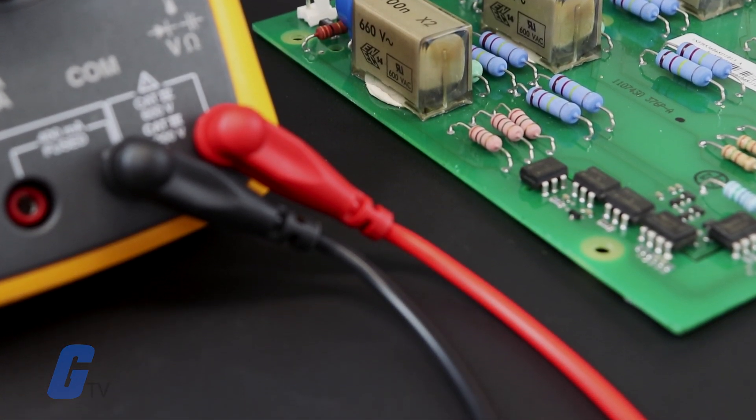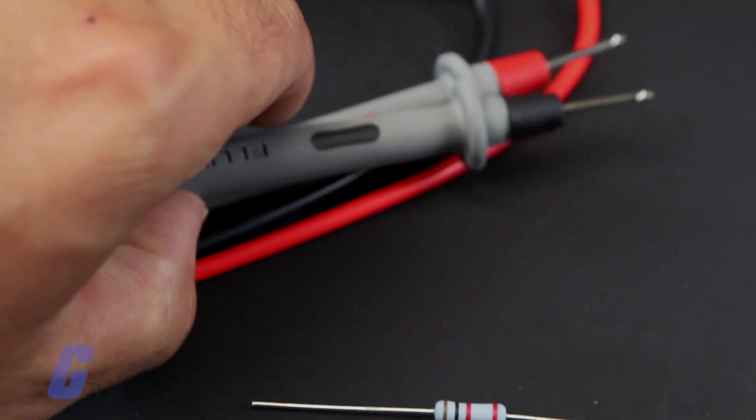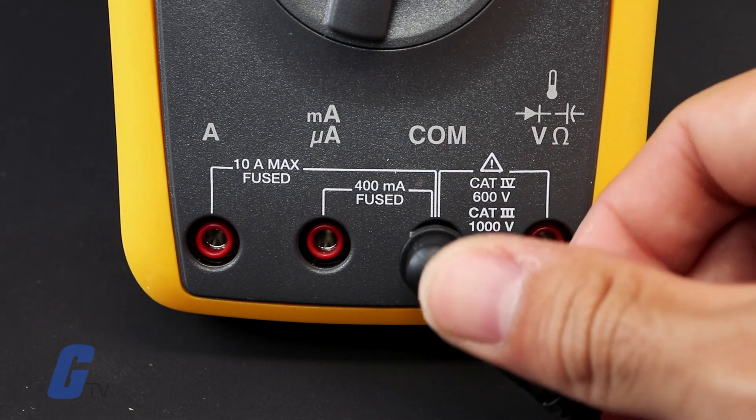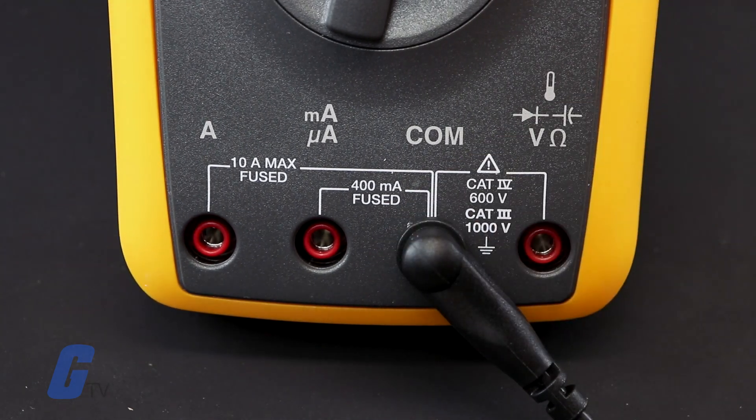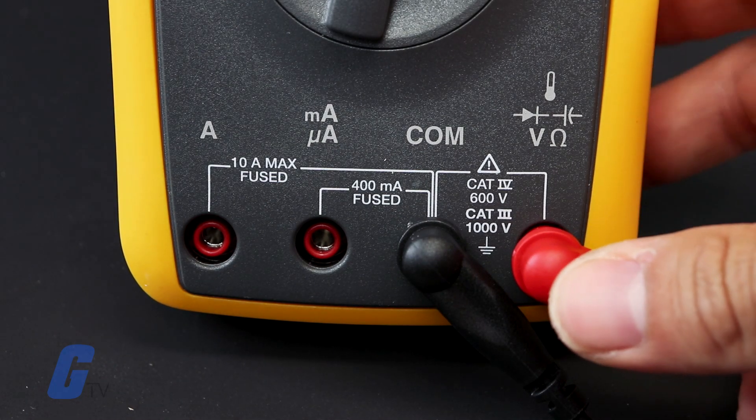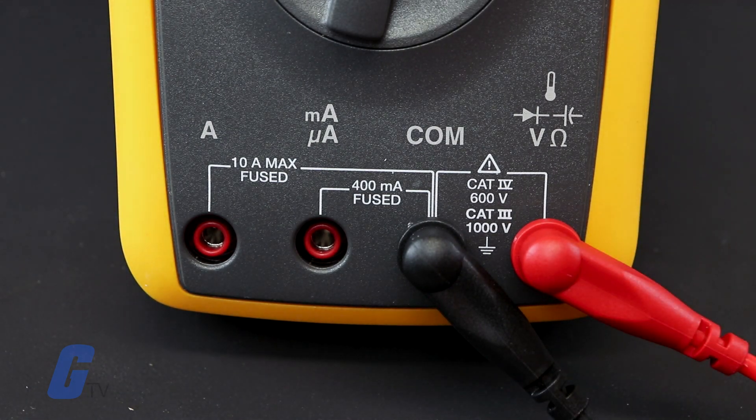Power it off, unplug it from the wall, and remove any batteries if necessary. If you have not already done so, plug the black probe into the COM port on your multimeter and the red probe into the voltage omega milliamp port.